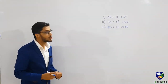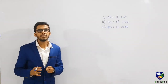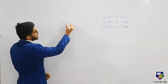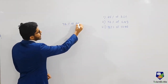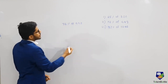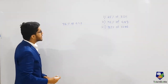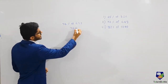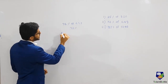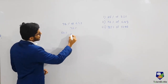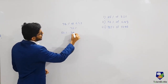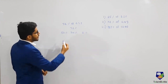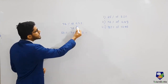Let's check the next problem to understand the method better. We need to find 72 percent of 448. We split 72 percent into smaller percentages: 50 percent, 20 percent, and 2 percent.